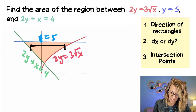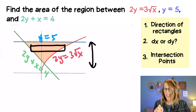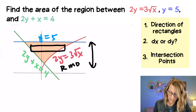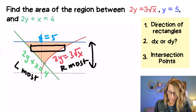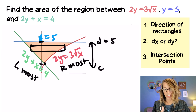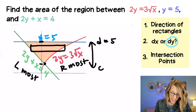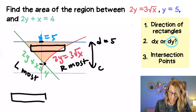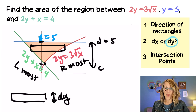I don't want to do two separate areas if I don't have to, so let's look at what a horizontal rectangle does. If I draw in a horizontal rectangle, going in the y direction, I have a rightmost function which is my red curve and a leftmost function which is my green line, and that's true from my lower y value up to y equals 5. So dy or dx — I definitely want a dy here because of that rectangle. That rectangle's width is in the y direction, which means I want all of my functions in terms of y.